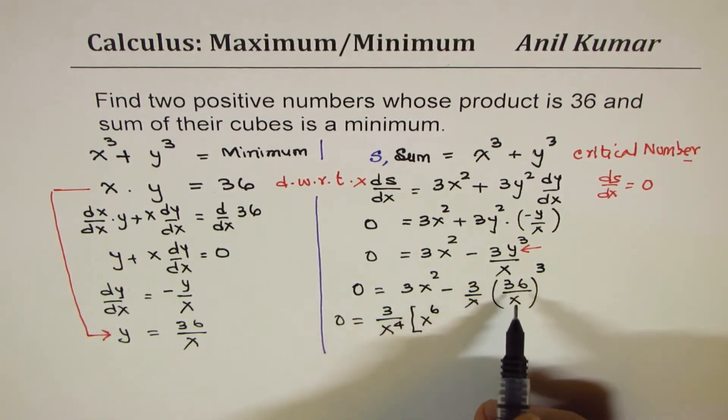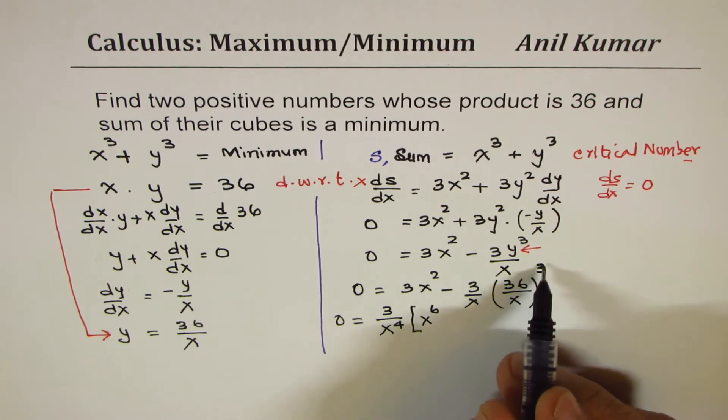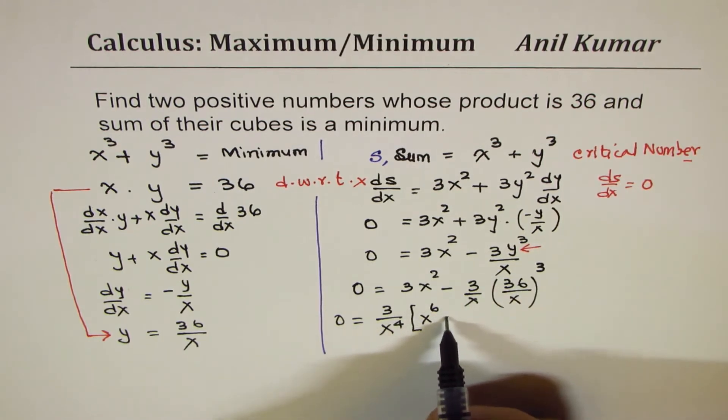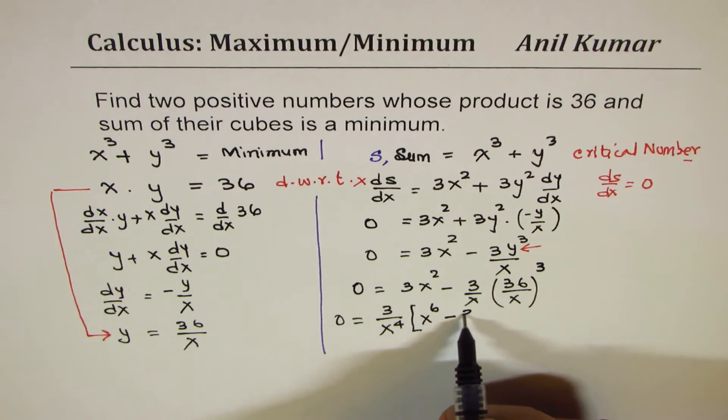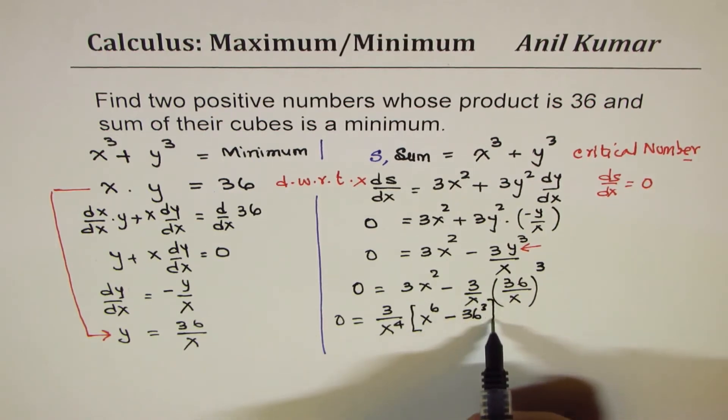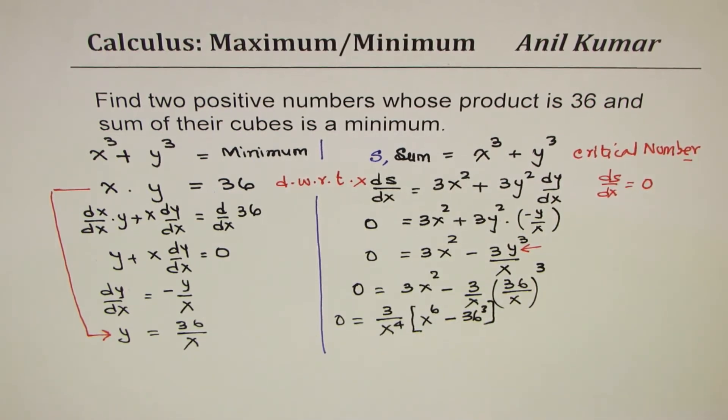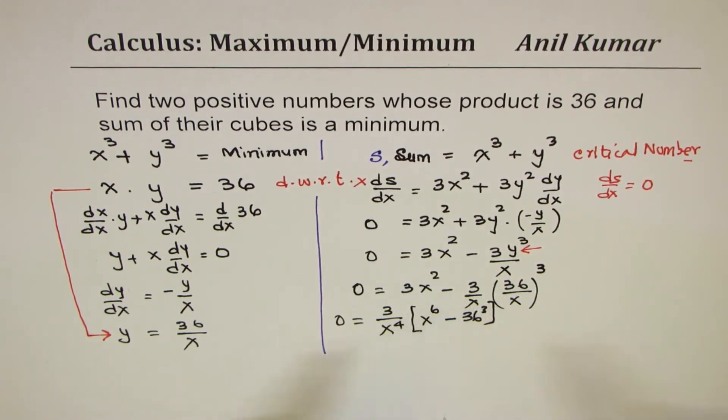And here we have 36 cube, so let me write this as minus 36³. So that is what we get here. Now for this expression to be 0, x to the power of 6 should be equal to 36 cube.